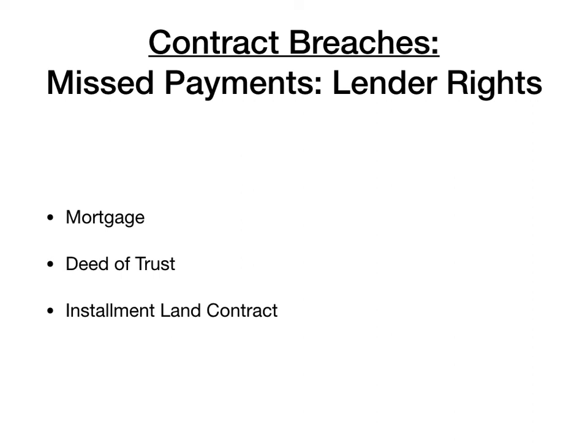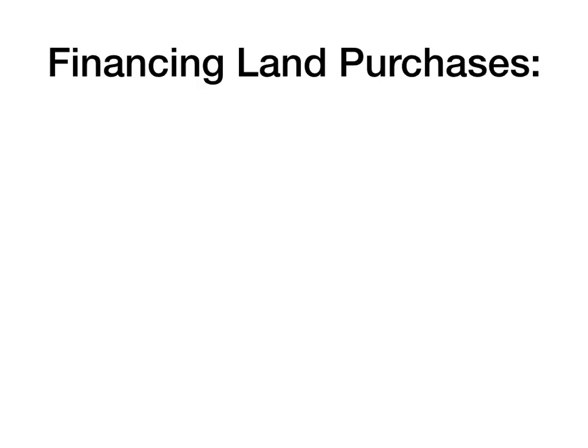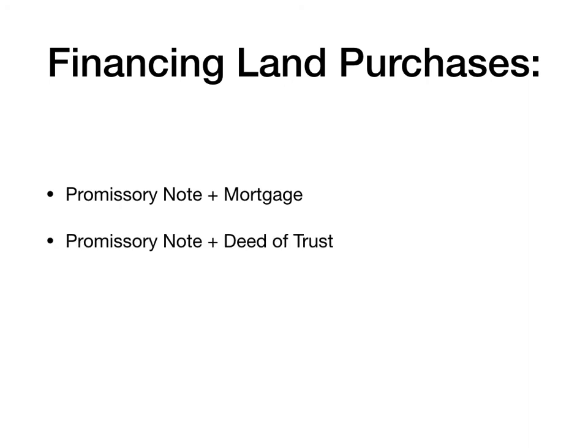In the next lecture, we'll discuss foreclosure in more detail — what the lender can do if there is a missed payment. When you finance land purchases, it is always done with a promissory note and some type of security interest, which can be either a mortgage or a deed of trust depending on the state.